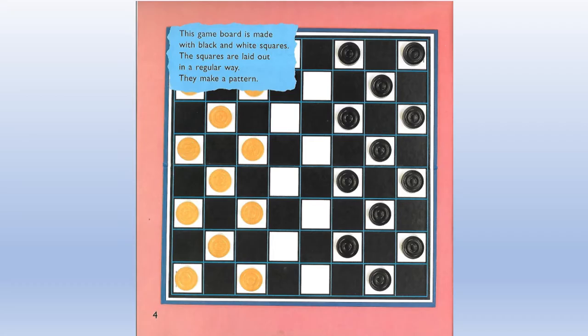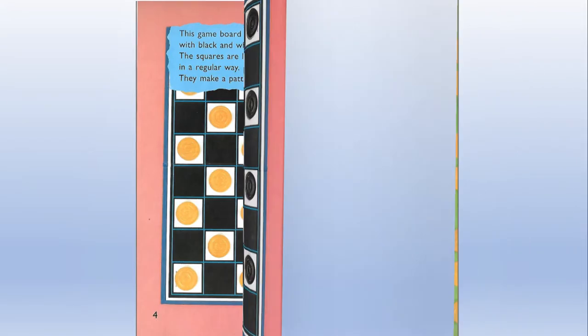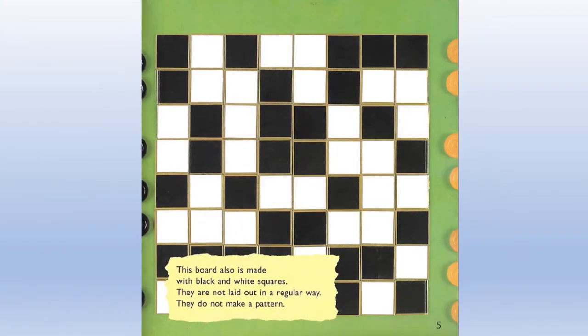This game board is made with black and white squares. The squares are laid out in a regular way. They make a pattern. This board also is made with black and white squares. They are not laid out in a regular way. They do not make a pattern.